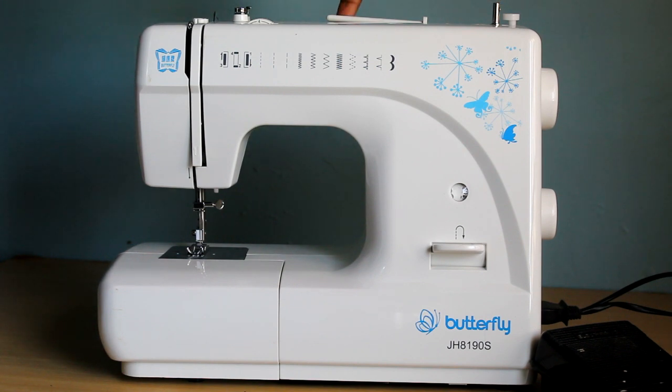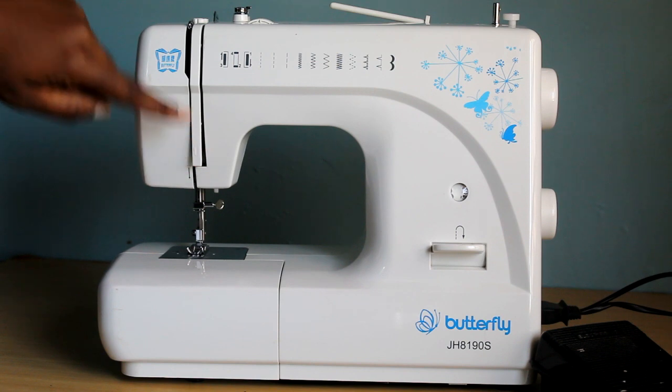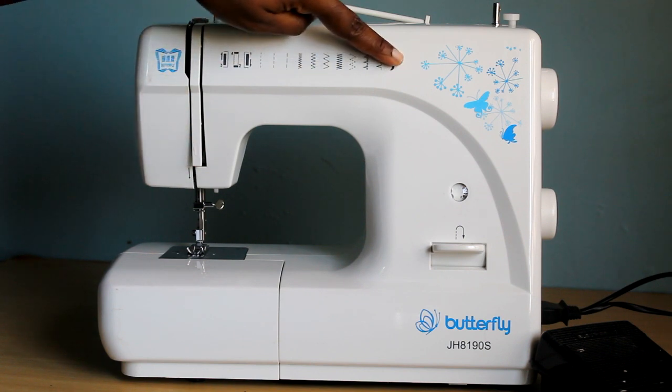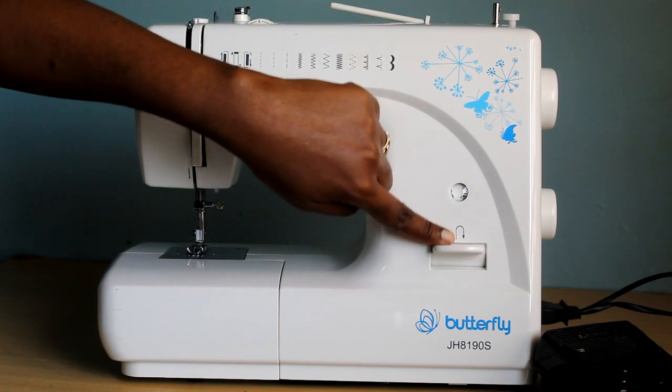You also have a tension knob and you have some thread guides here where you pass your thread when you're threading the machine. Down here you still have more thread guides and your tension discs are in there. You have your stitches and stitch selector window, you have your reverse lever for sewing backwards a little.